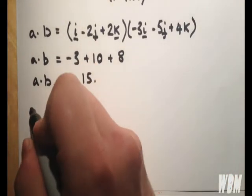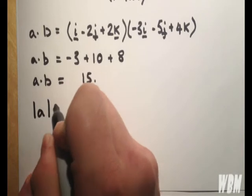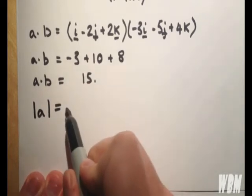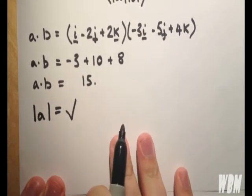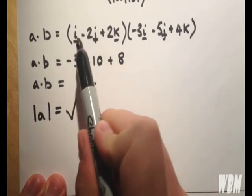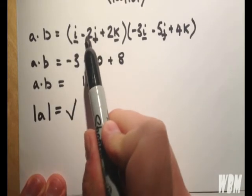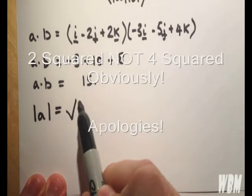Of course, to find the magnitude of a. Here's a. So we have 1 squared plus 2 squared plus 2 squared, all rooted.